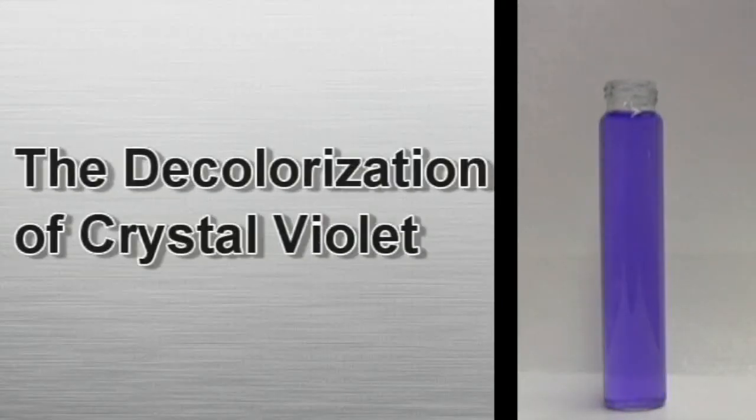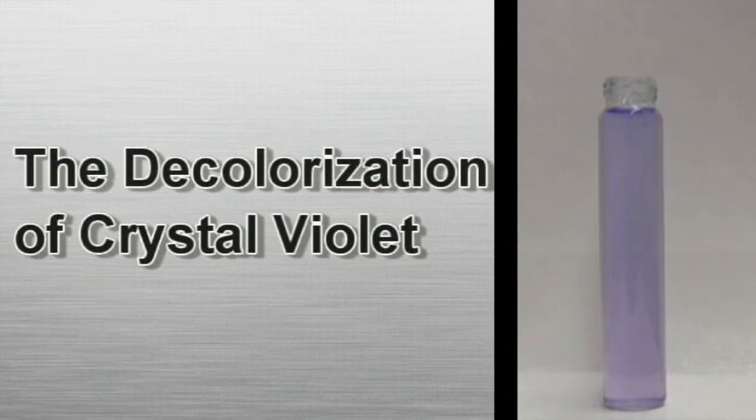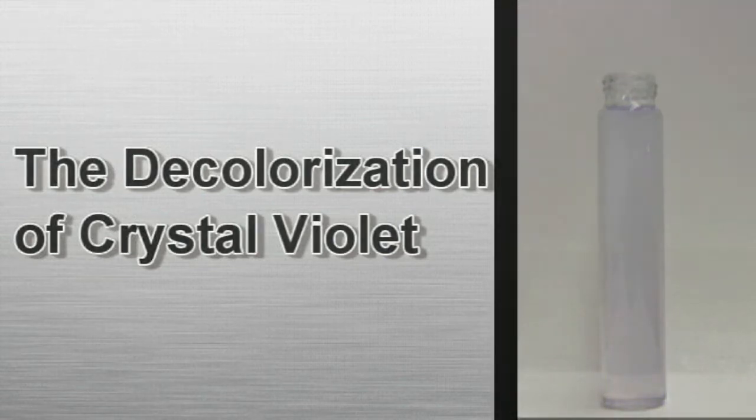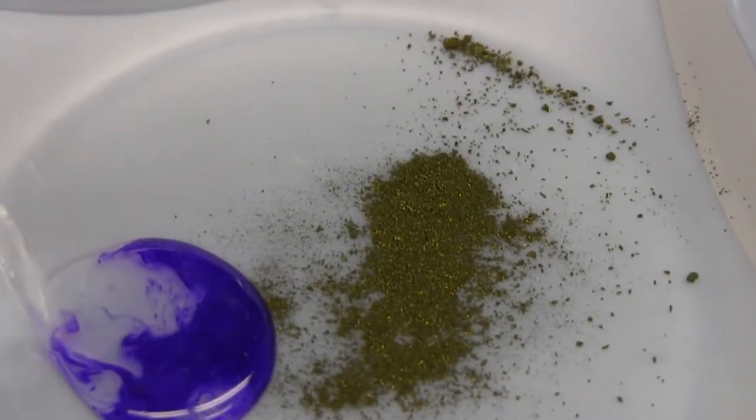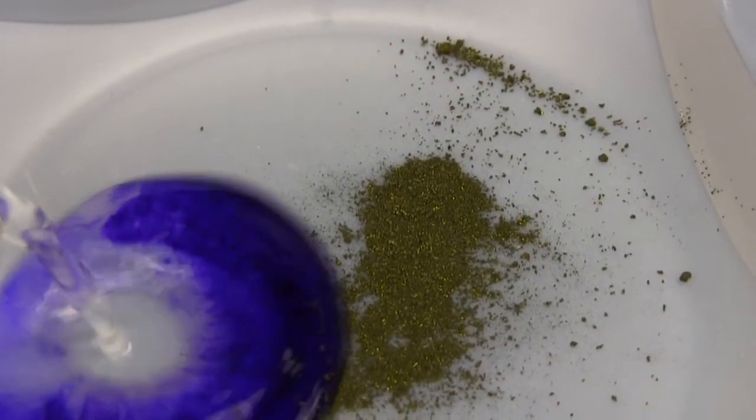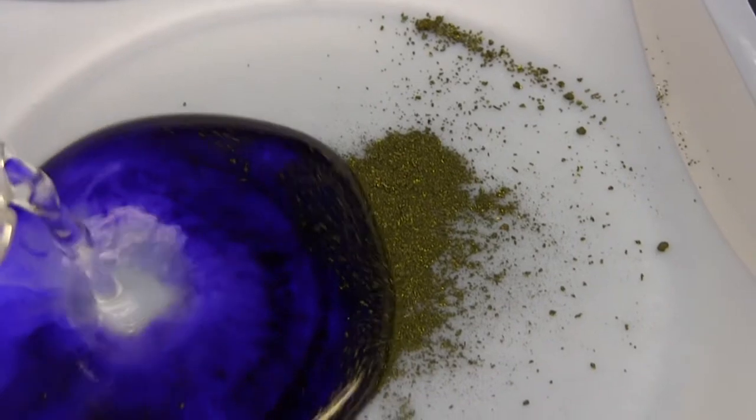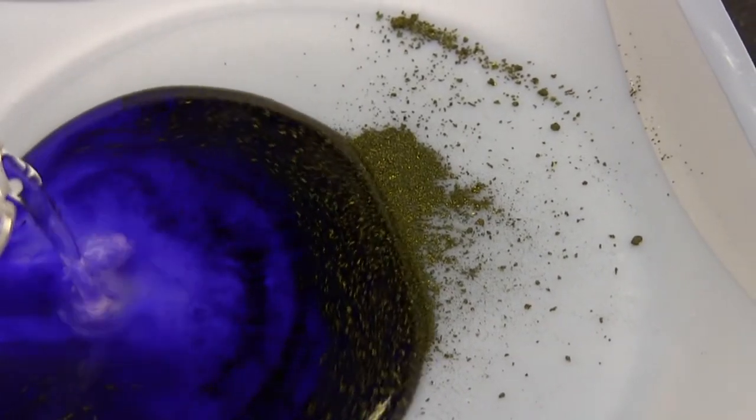We're going to discuss the decolorization of crystal violet. But first, maybe we should talk about what crystal violet is exactly. It's a chemical that appears to be a dark greenish-yellow powder, but when we mix it with water, it turns into a vibrant violet solution.